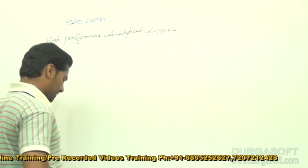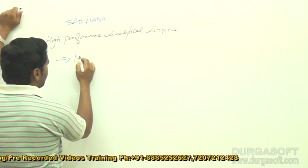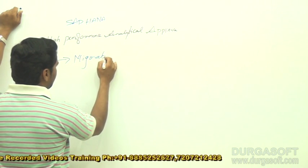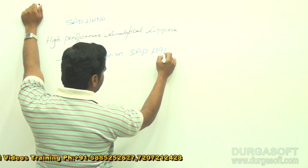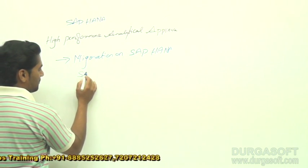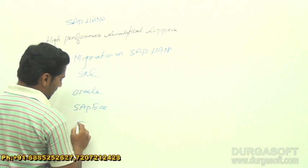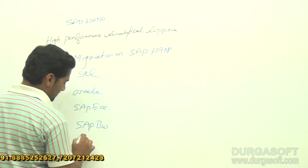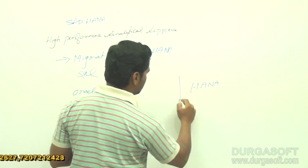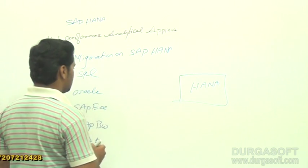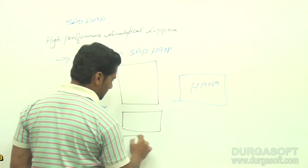Let us discuss the SAP HANA installation and migration part. We have different databases — a SQL server, vertical database, SAP ECC, SAP BW, or flat files — to load into the HANA system. We have two different migration cases: we can use SLT, DXC, or BODS.